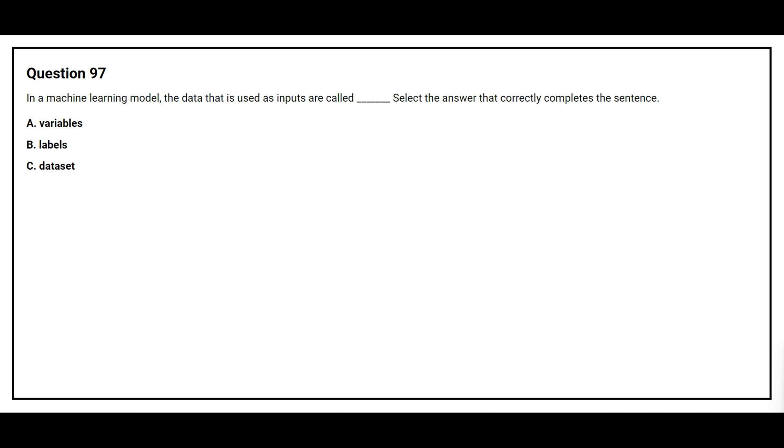Question number 97. In the machine learning model, the data that is used as input are called. Select the answer that correctly completes the sentence. Option A, variables. Option B, labels. Option C, data set. The correct answer is option A, variables.